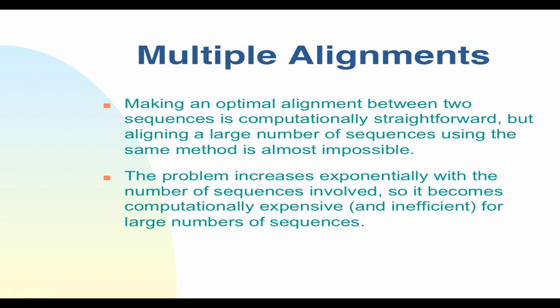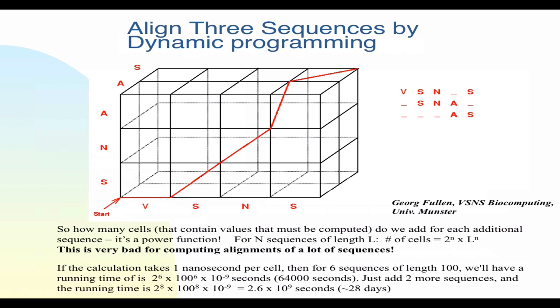When making a multiple alignment, aligning a large number of sequences using the same dynamic programming method is almost impossible. In pairwise alignment, the number of cells increases with the square of the sequence lengths. For three sequences, it's the cube. For a hundred sequences, it's a hundred-dimensional power function. That gets intractable very quickly.